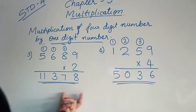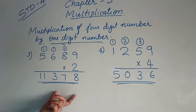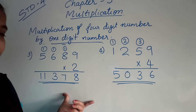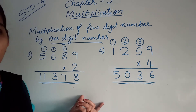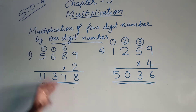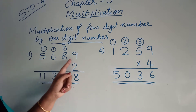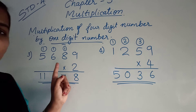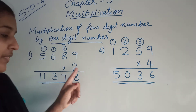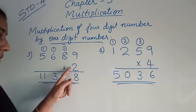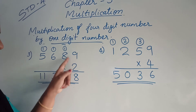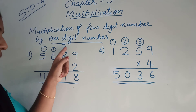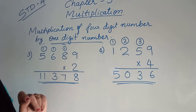Children, here is another example question, example question number 3. These questions are in your textbook also, so everyone has to copy all these questions to your maths notebook. The question is 5,618 × 2. You should know the table of 2, up to 9. 2 nines are 18. From that, you can write 8 here and 1 carry over to the next place.